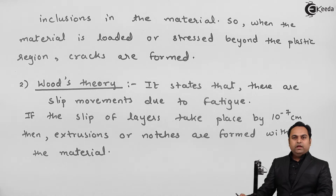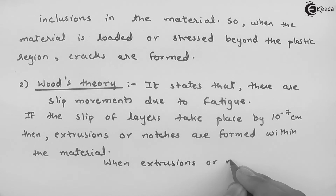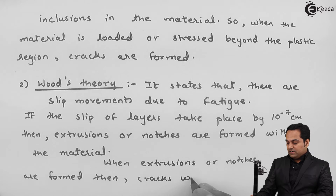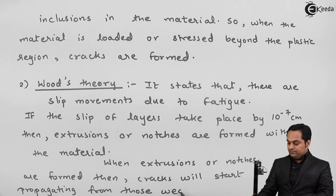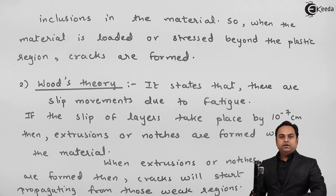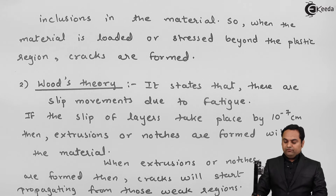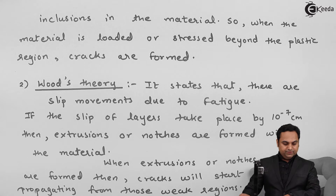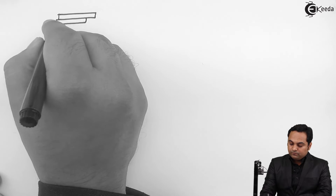When extrusions or notches are formed, cracks will start propagating from those weak regions. Whenever we get notches or extrusions in the material, cracks will start forming from those weak regions — where the area changes — that is, at extrusions, notches, or internal grooves. This can be explained with a diagram of slip planes.